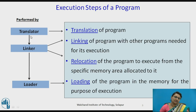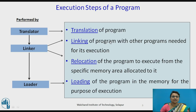What does the translator do? The translator translates the source program into the object program. The linker performs usually two things: linking and relocation. Linking connects all the other programs or modules required for execution. Relocation involves relocating the program to execute in a specific memory area allocated to it in primary memory.